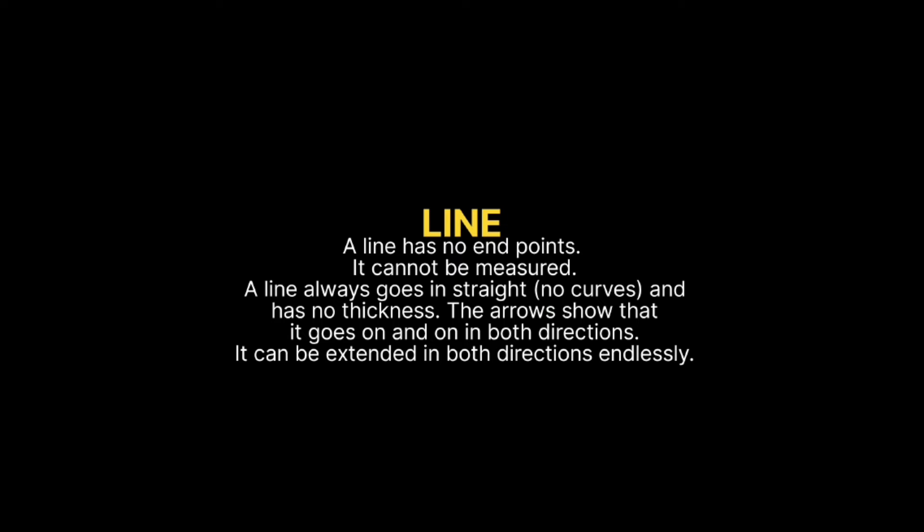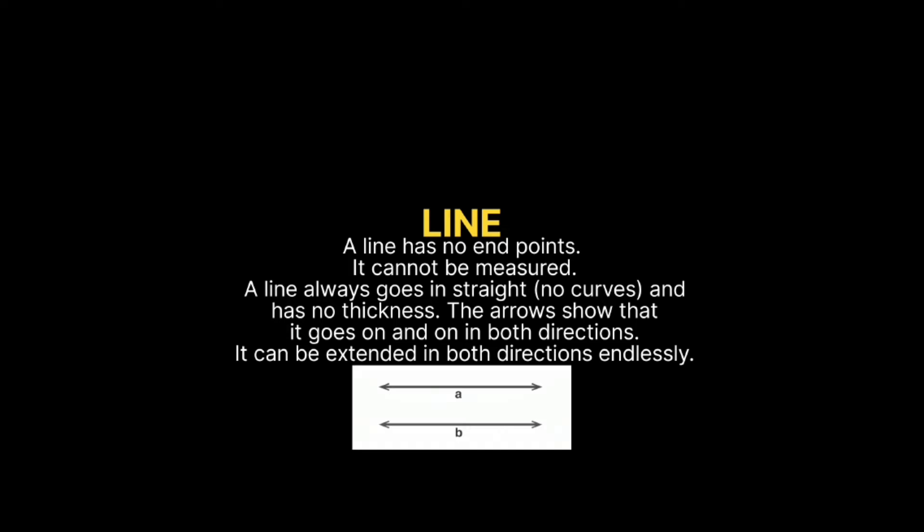Line. A line has no endpoints. It cannot be measured. A line always goes in straight and has no thickness. The arrows show that it goes on and on in both directions. It can be extended in both directions endlessly.